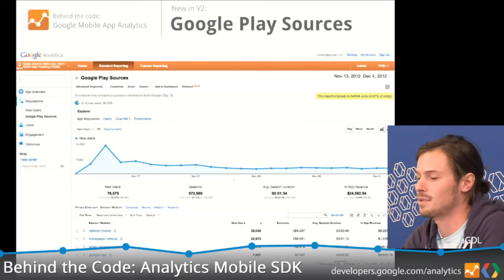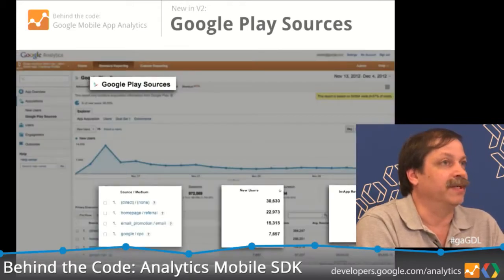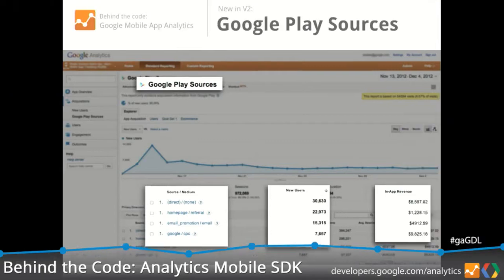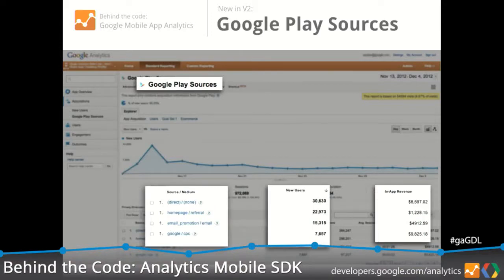This next one is important to a lot of developers in terms of seeing where their users are coming from across different marketing channels. We've had some attribution before, but we do have a new Google Play Sources report. This one got a lot of people really excited — you can see how effective your advertising is in driving users to your application. It's very easy to set up. You can get an idea of what your campaigns are doing in terms of generating revenue if you're using e-commerce, how many users are being brought to your app from various marketing campaigns, and what kind of activities those users are doing in your application.